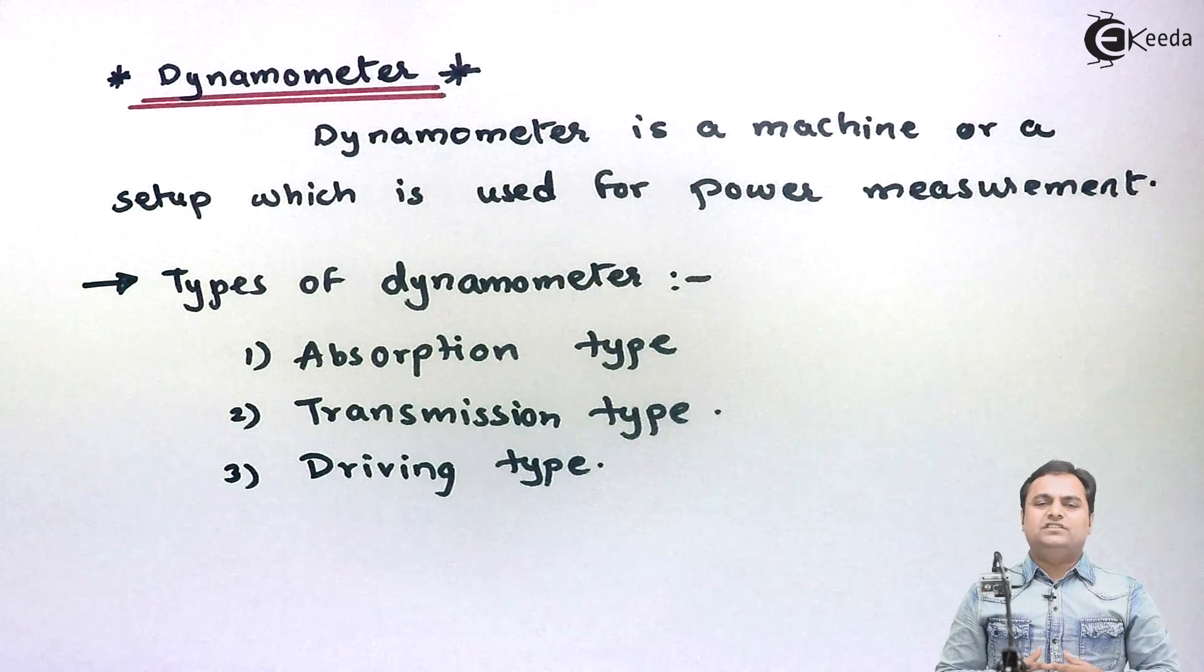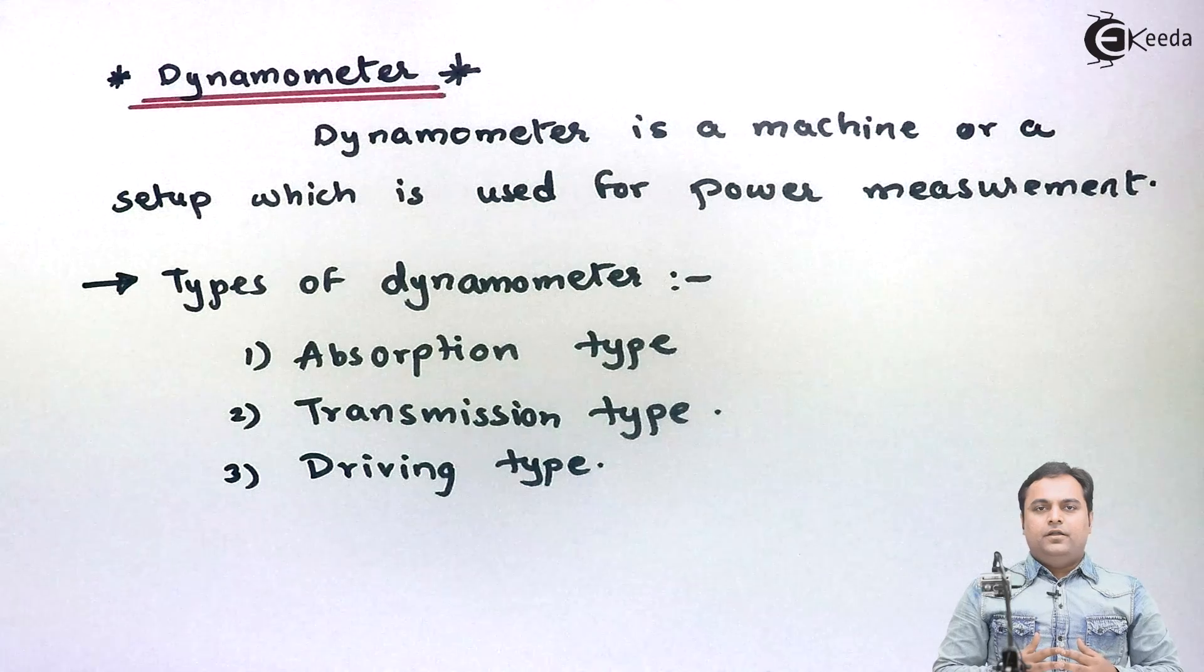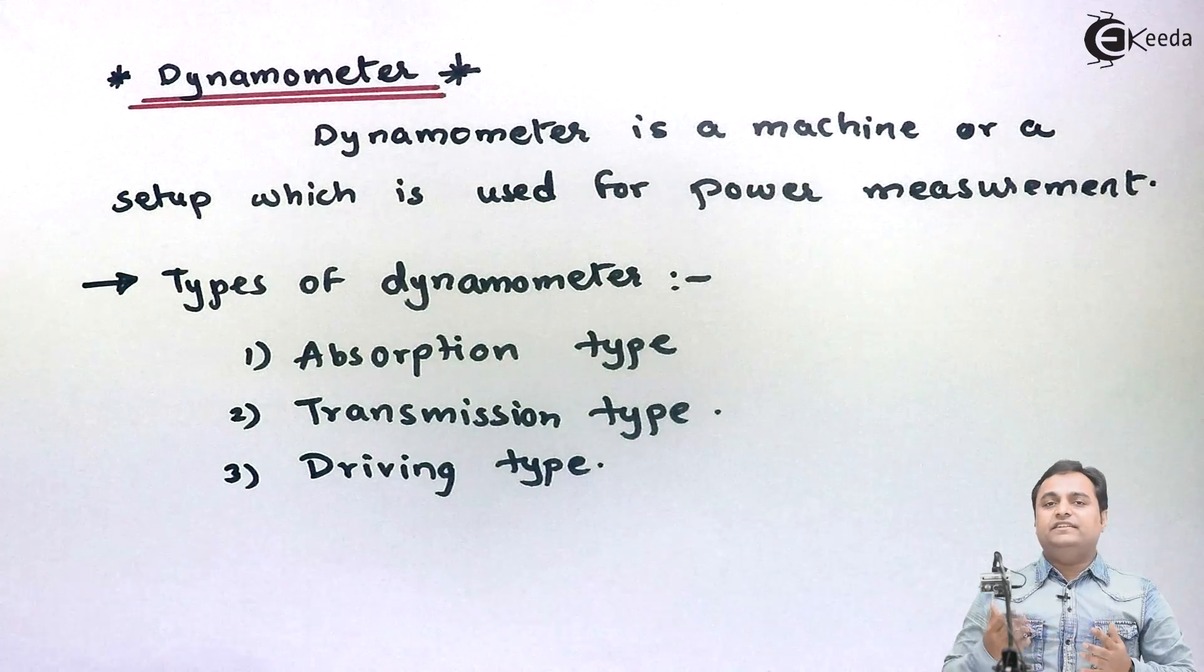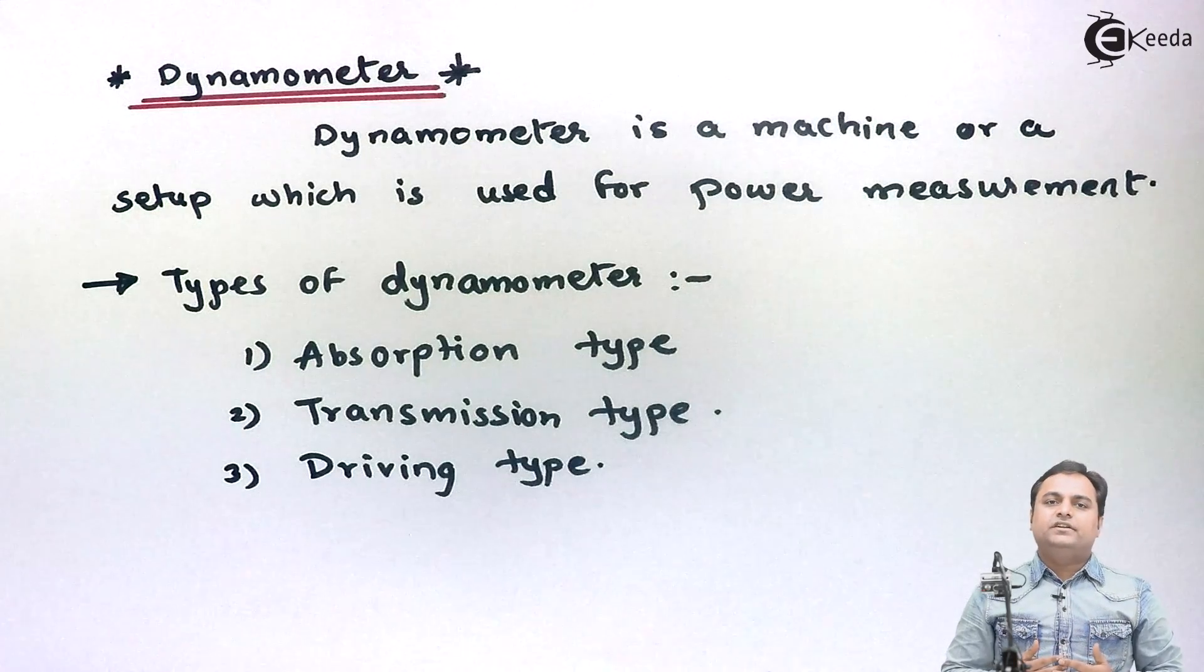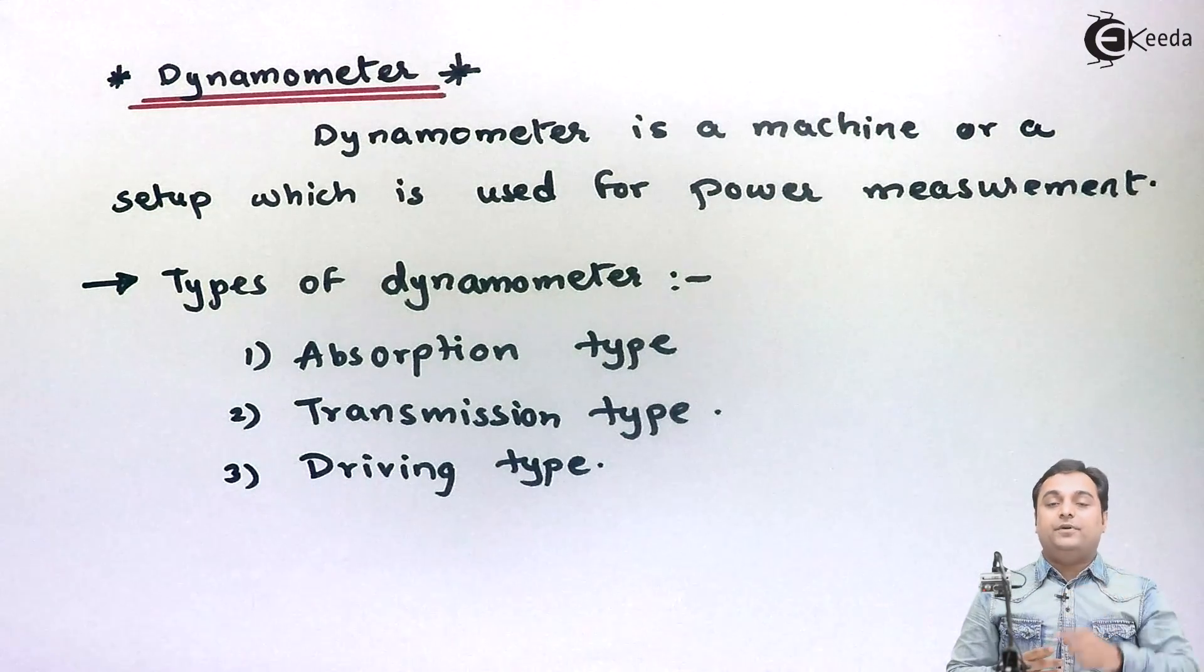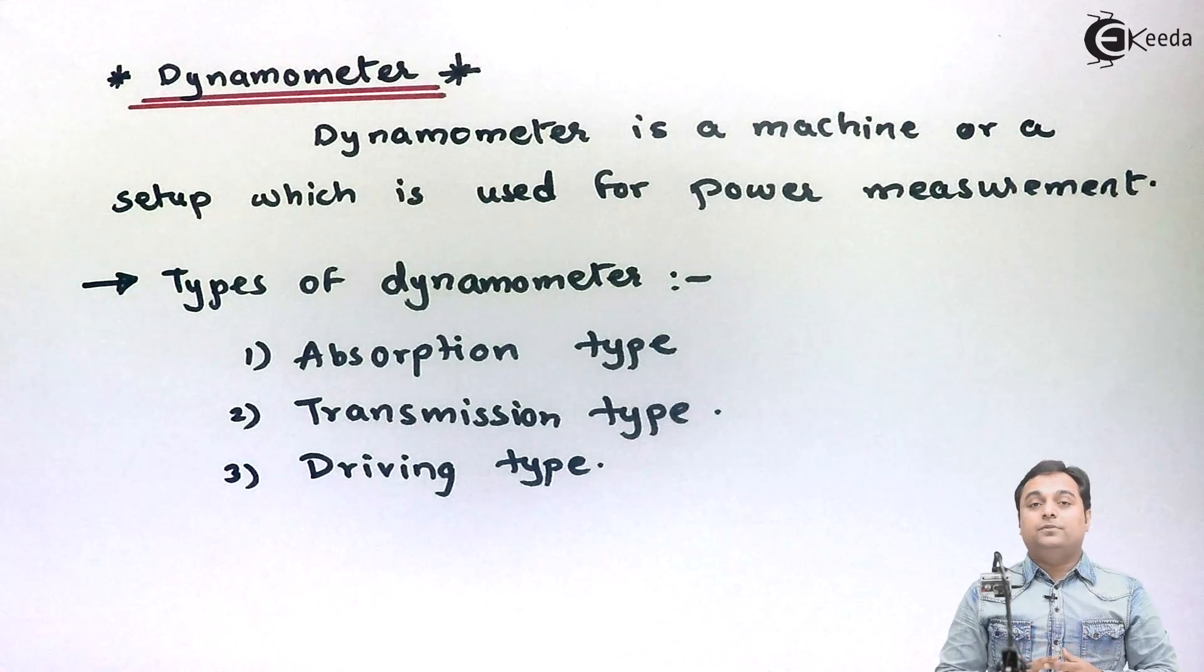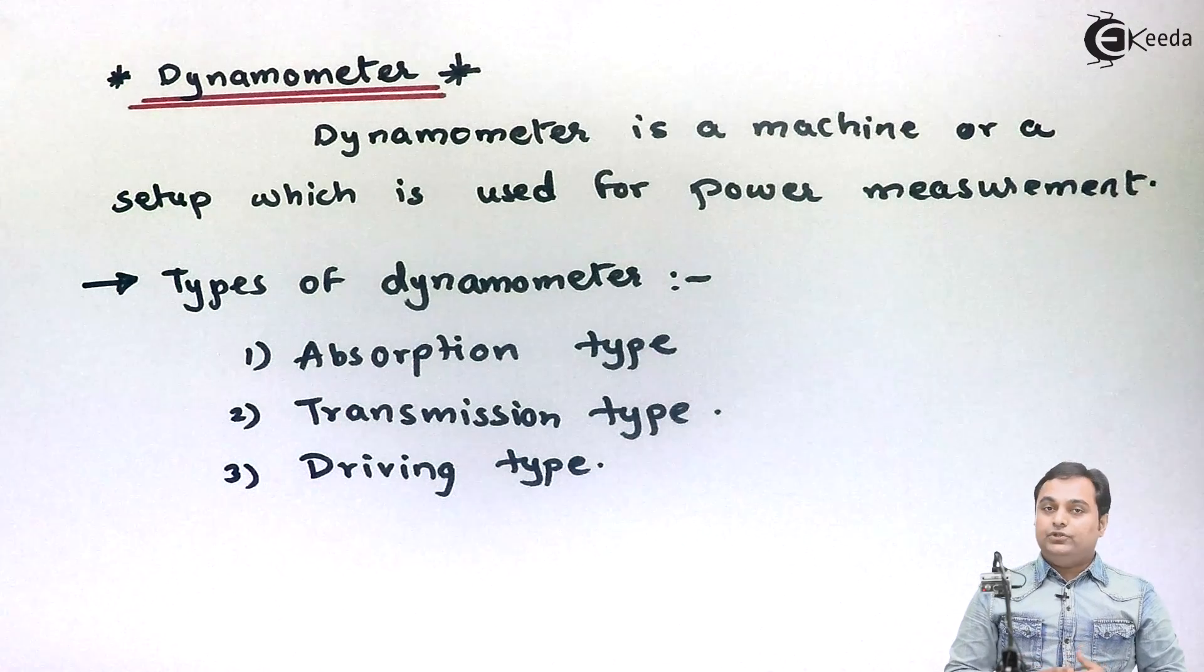Dynamometer works on the principle which is similar to the brake because some kinds of dynamometers stop the shaft and then measure the power. So they work on the principle of braking.